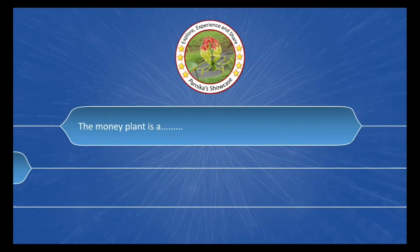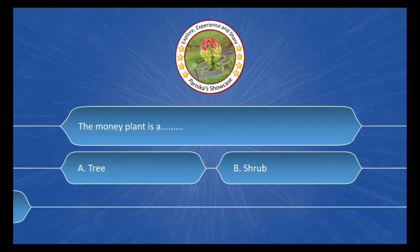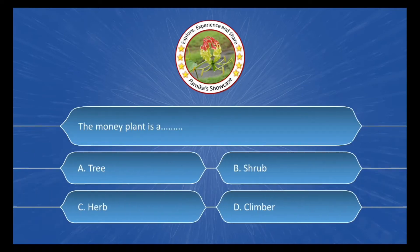The money plant is a ___. The options are: A. Tree, B. Shrub, C. Herbs, D. Climber. The correct answer is Option D: Climber.